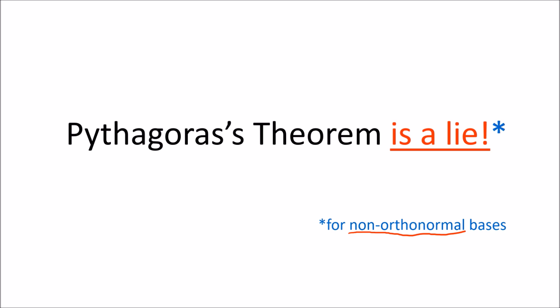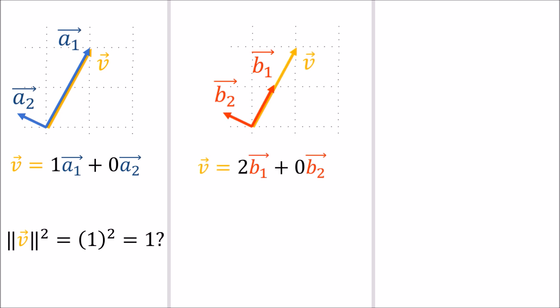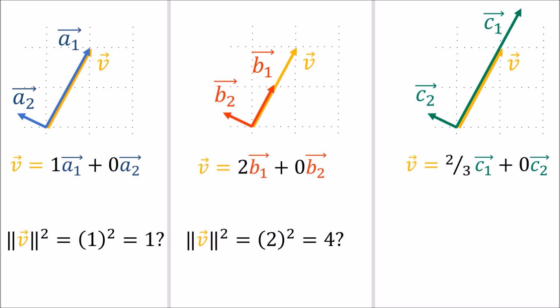Pythagoras' theorem only works for getting vector lengths in the very special case where we have an orthonormal coordinate system. If we play around with different coordinate systems where a vector v is always parallel to one of the basis vectors, this becomes obvious. In the a-coordinate system, where basis vector a1 is the same length as v, Pythagoras tells us the squared length of v is 1. In the b-coordinate system, where b1 is shorter than v, Pythagoras gives a squared length of 4. And in the c-coordinate system, where c1 is longer than v, Pythagoras gives a squared length of 4/9. So in general non-orthonormal coordinate systems, Pythagoras' theorem is no good to us.